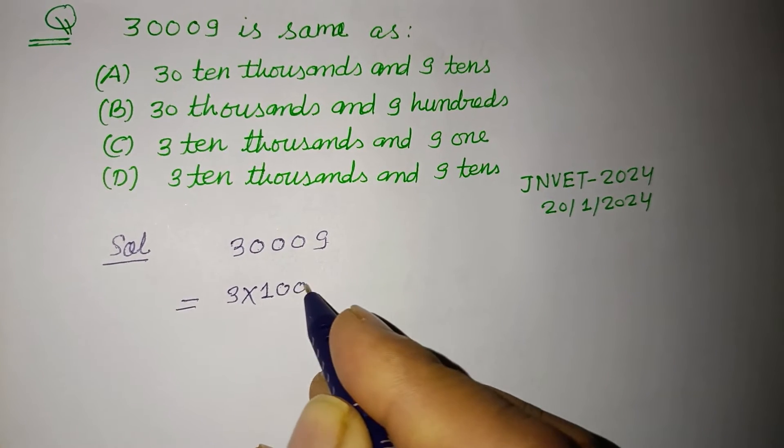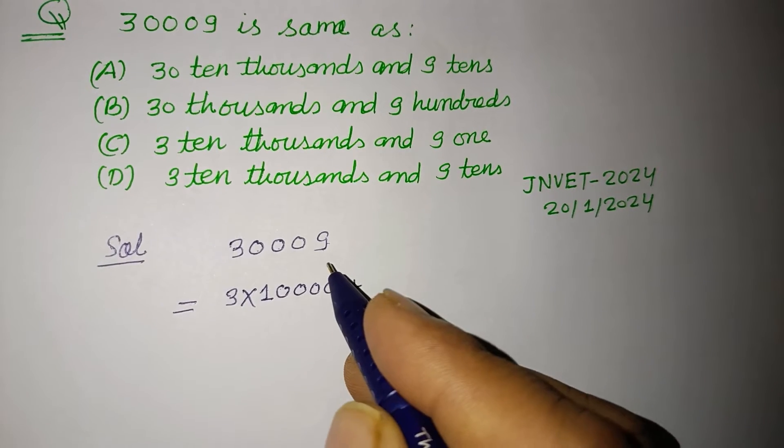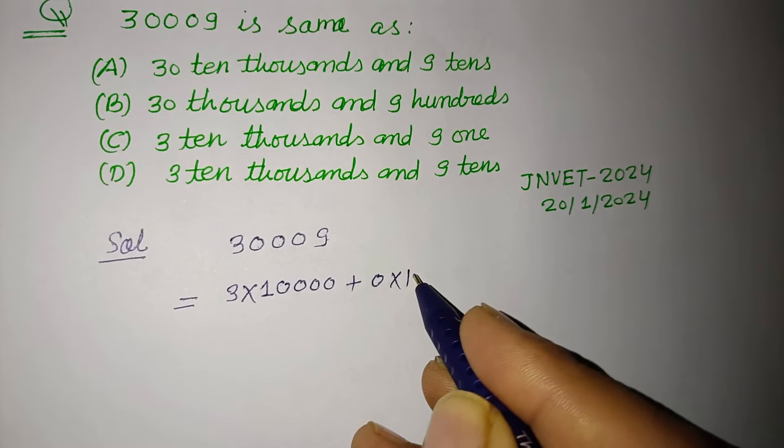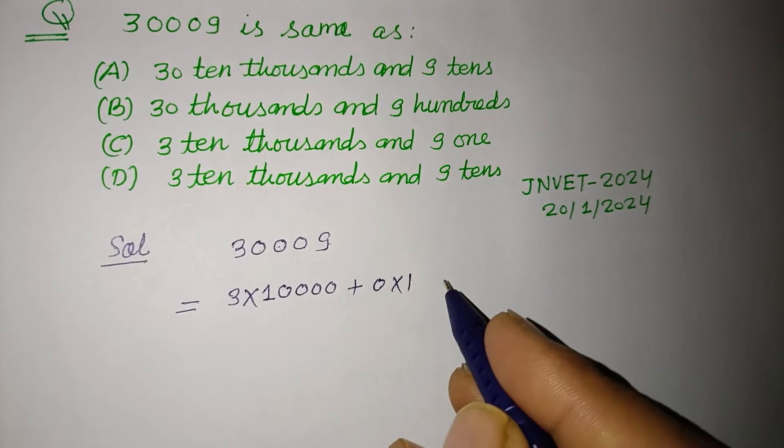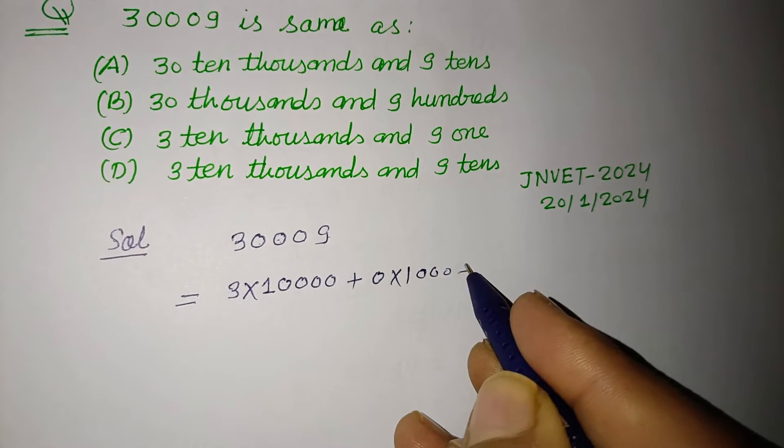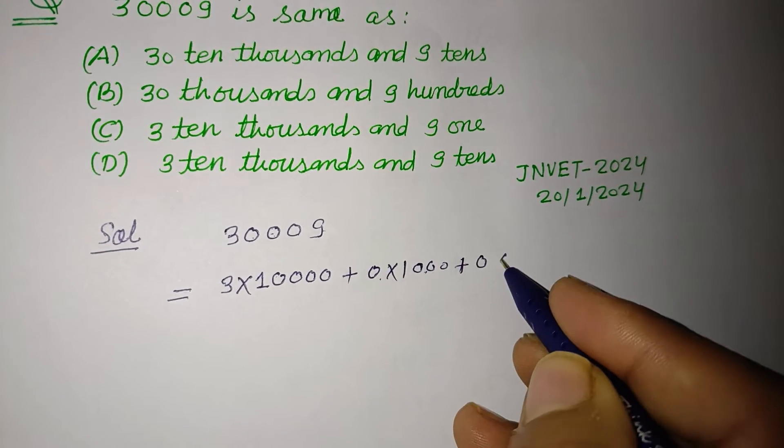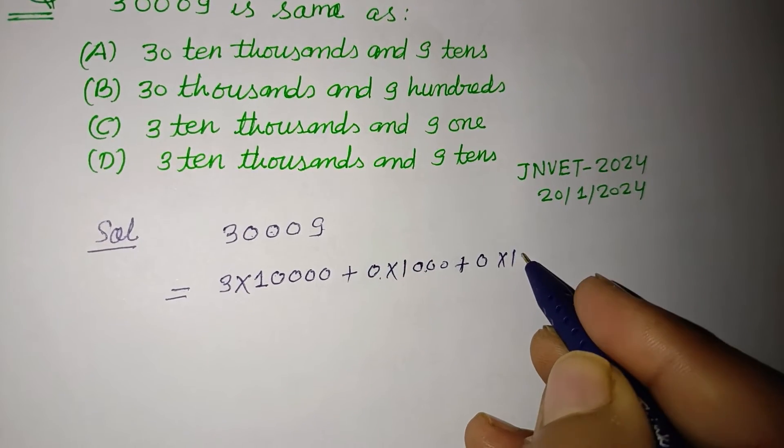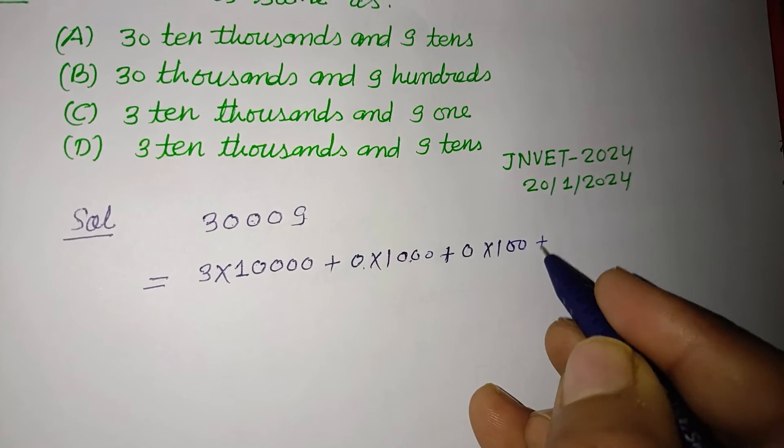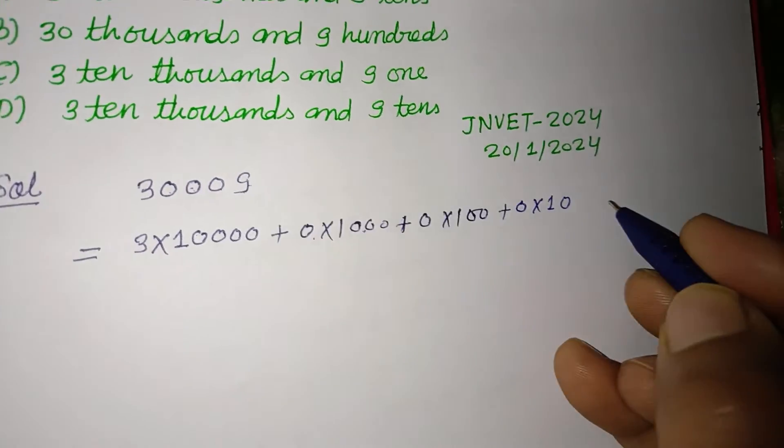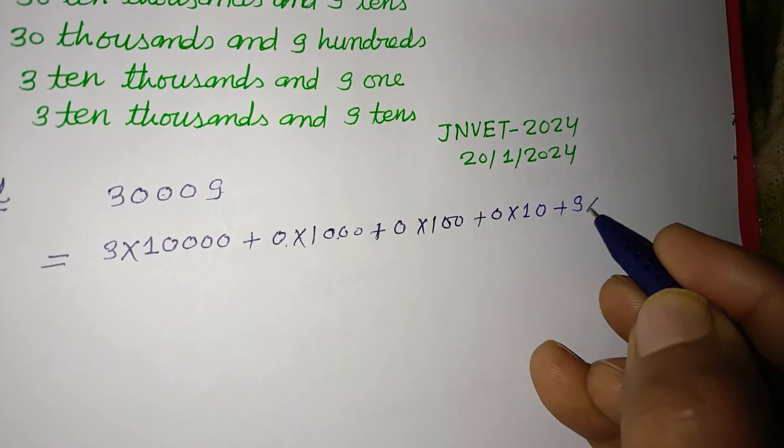So 1, 2, 3, 4, 0. And here 0 into 1. After 3, 0, 1000 place is 0, plus 0 into 100, 100 place is also 0, plus 0 into 10 place is 0 and 9 into 1.